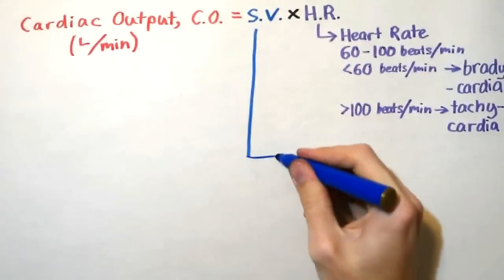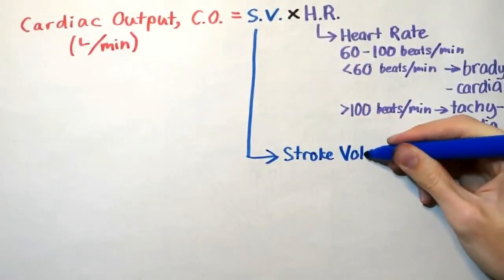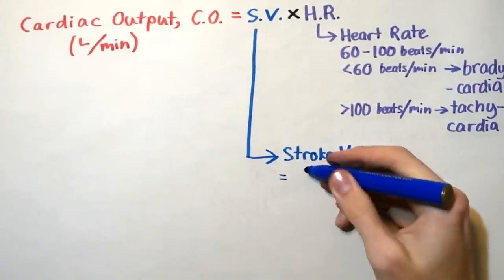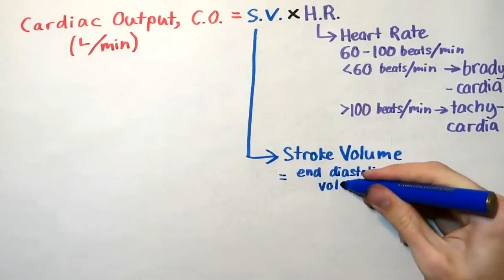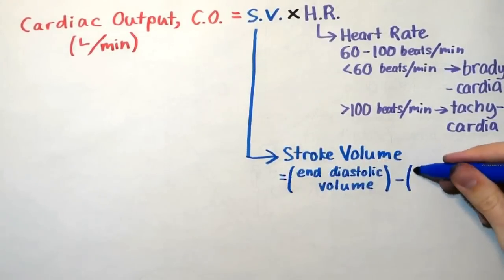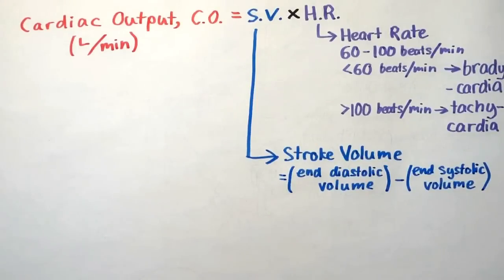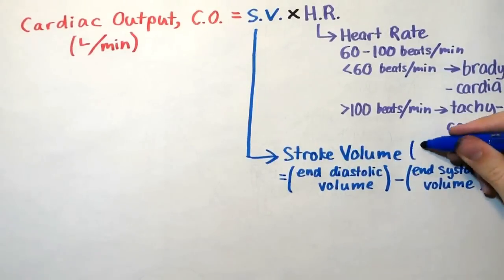The stroke volume is the volume of blood pumped from the left ventricle per beat, and it is given by the difference between the end-diastolic and the end-systolic volume. The end-diastolic volume is the amount of blood collected in a ventricle during diastole, which is the relaxation period. The end-systolic volume is the volume of blood remaining in a ventricle after contraction. The unit of measurement is typically milliliters per beat.